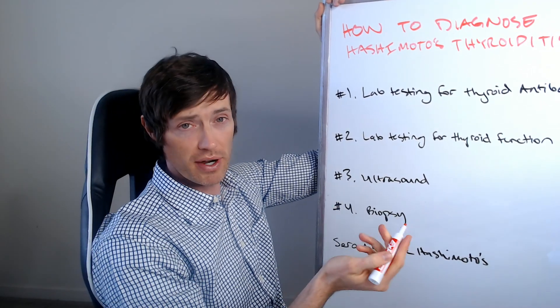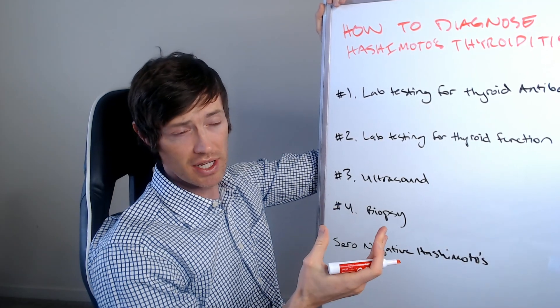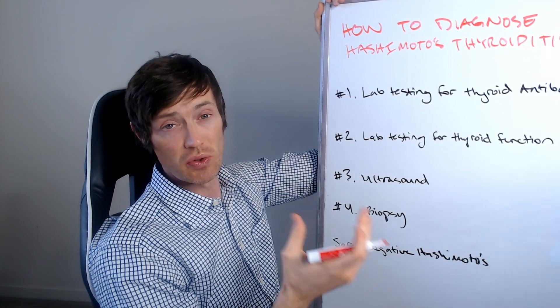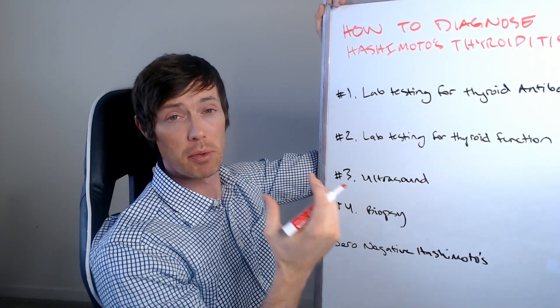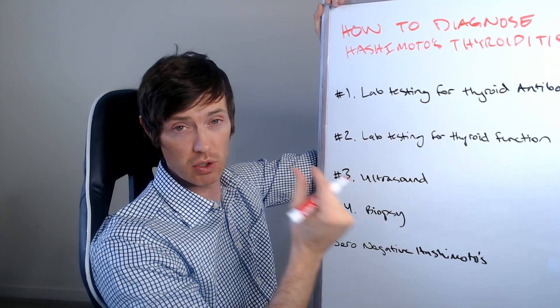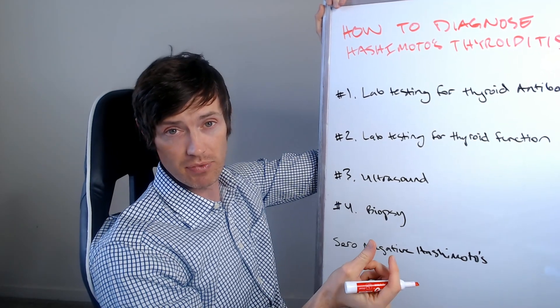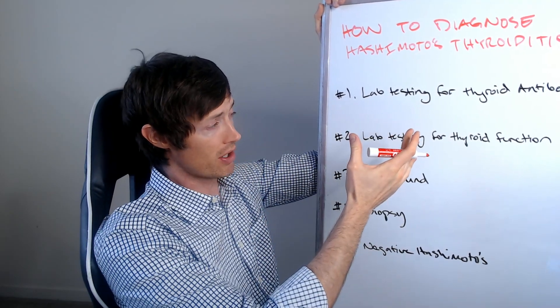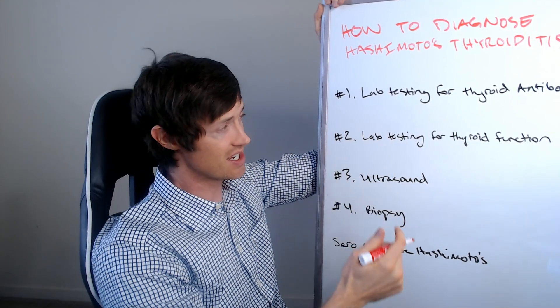So if you have the presence of these antibodies in your blood, it is telling your body, or that's an indication to you that your body is attacking itself because you should never have antibodies to a portion of your thyroid gland floating around in your body at any given time. That is pretty much the hallmark of Hashimoto's thyroiditis because it is an autoimmune disease.